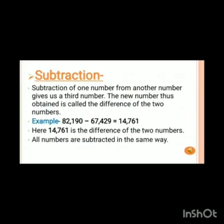Now let's move on to the next operation on numbers: subtraction. Subtraction of one number from another number gives us a third number. The new number thus obtained is called the difference of the two numbers. Or we can say we get the difference between two numbers by subtracting the smaller number from the bigger number. As you can see in the example, 82,190 minus 67,429 will give you 14,761. Here 14,761 is the difference of the two numbers and all the numbers are subtracted in the same way.